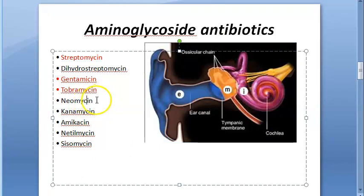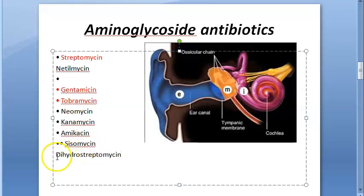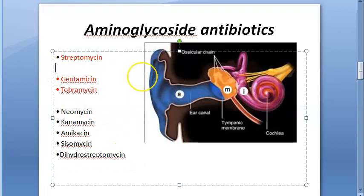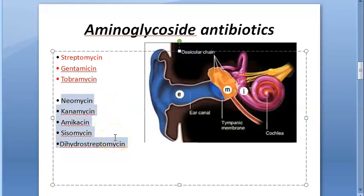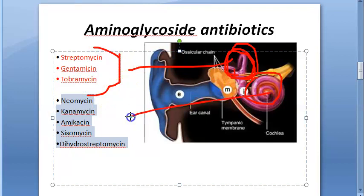Another category of aminoglycosides includes neomycin, kanamycin, amikacin, sisomicin, and dihydrostreptomycin. These are mainly cochleotoxic, whereas the previous group was mainly vestibulotoxic. The vestibular system is one part of the inner ear, and the cochlea is another part — vestibulotoxic drugs affect the former, cochleotoxic drugs affect the latter.